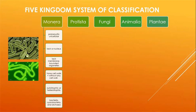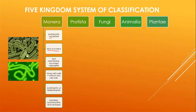The first kingdom is Monera. Prokaryotic, unicellular organisms are present in Monera. Prokaryotic means they do not have a true nucleus. They lack a nucleus and also lack membrane-bounded organelles such as the Golgi apparatus, endoplasmic reticulum, and lysosomes — all are absent in Monera. They may or may not have a cell wall, so there are two types: some have a cell wall and some do not.